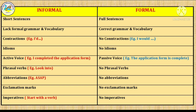You can use phrasal verbs in an informal letter, but you are not supposed to use any phrasal verbs in a formal letter. You can use abbreviations in an informal letter — for example, 'as soon as possible' can be written as ASAP — but abbreviations are not used in a formal letter. You can use exclamation marks in an informal letter, but no exclamation marks are allowed in a formal letter. You can use imperative sentences — a sentence starting with a verb — in an informal letter, but imperative sentences are not allowed in a formal letter.